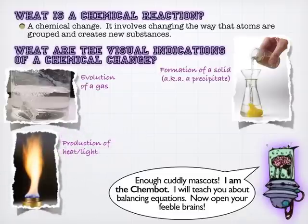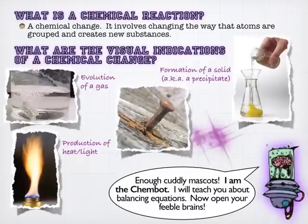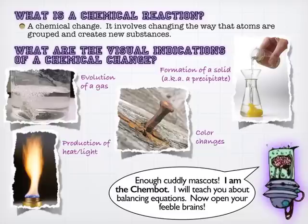Production of heat or light is a pretty good sign that there's some kind of chemical change taking place. And then finally, color change is also a great example. When things start changing colors, that's often an example of a chemical change.